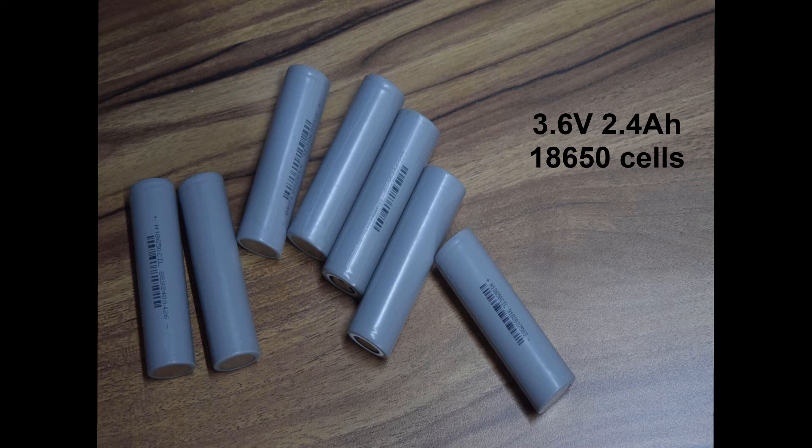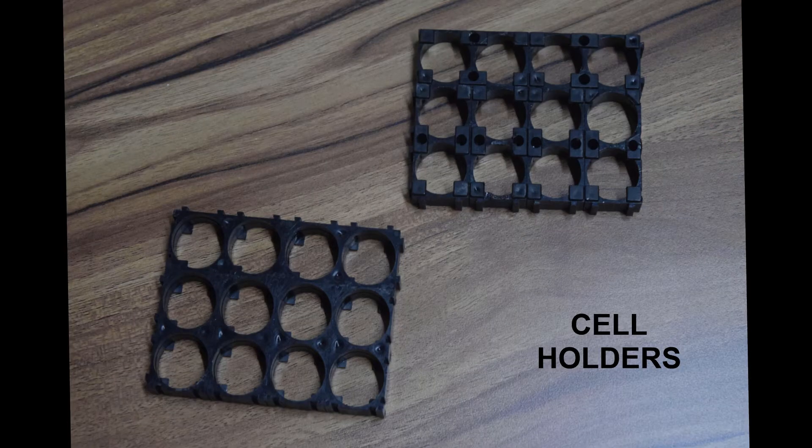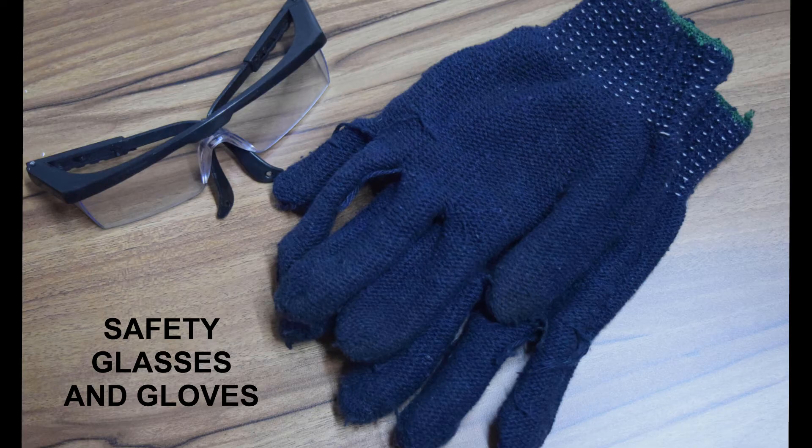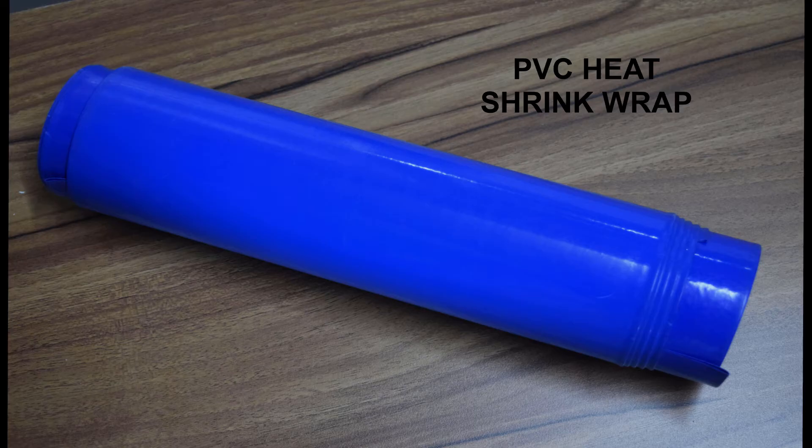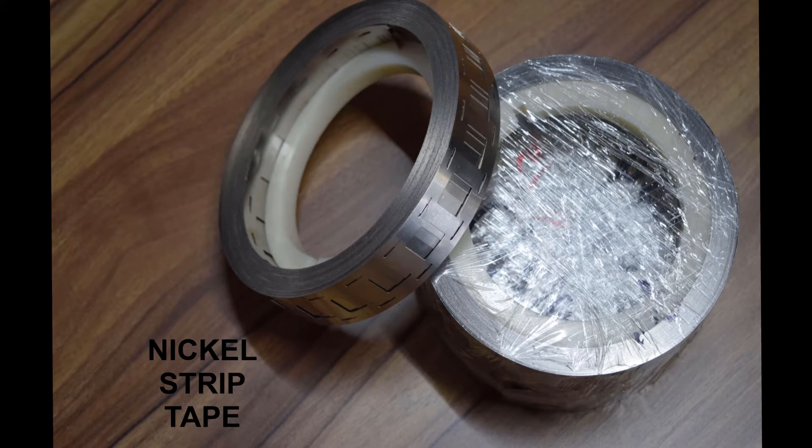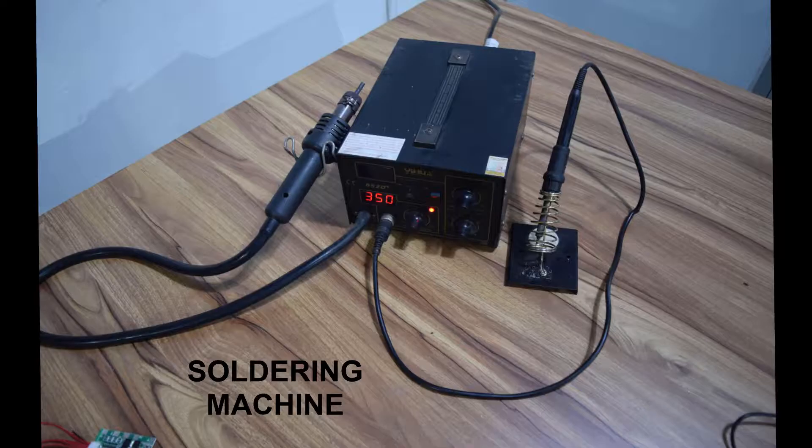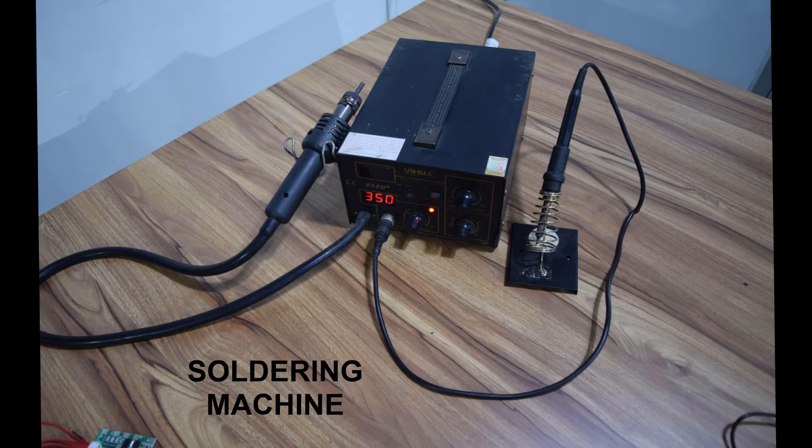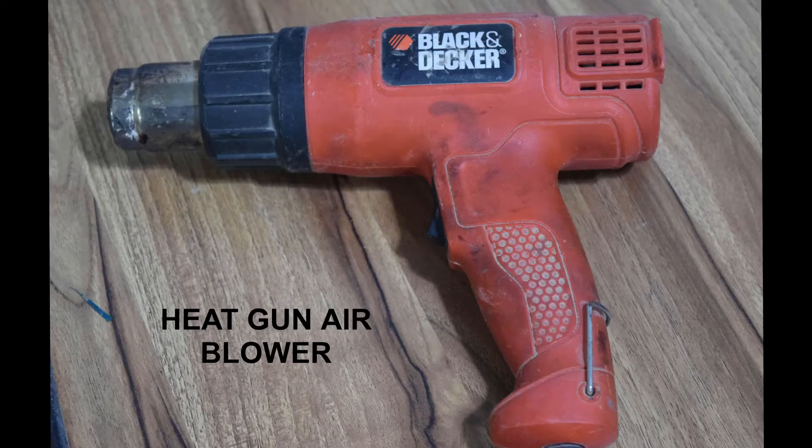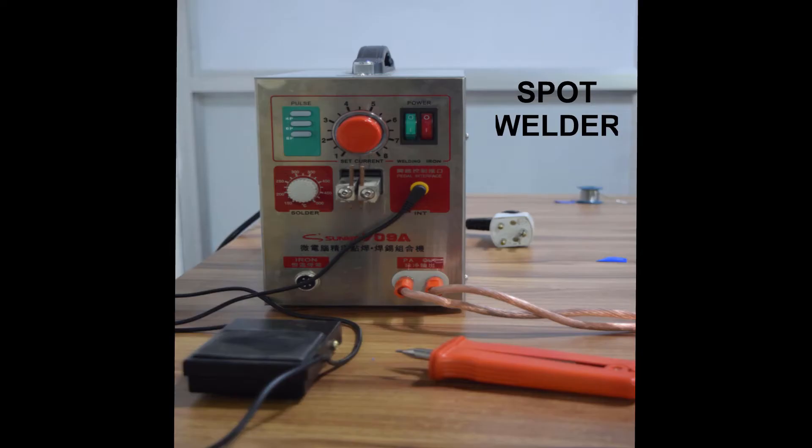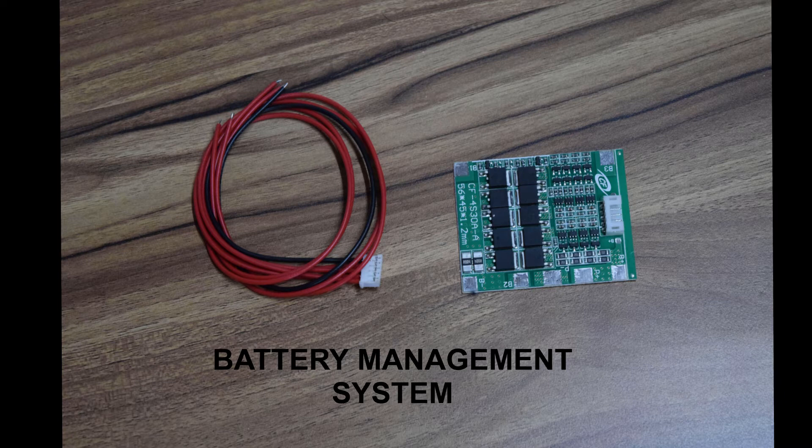The components required are as follows: 18650 lithium ion cells, cell holders, safety glasses and gloves, multimeter, PVC heat shrink wrap, nickel strips, soldering machine, heat resistant tape, heat gun blower, spot welder, and BMS circuit.